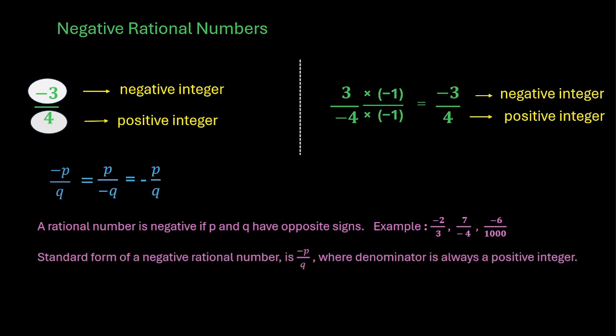These are a couple of examples of negative rational numbers. Now, let us look at the standard way. Standard form of a negative rational number is minus p by q. We will have to make sure that the denominator is always a positive integer.